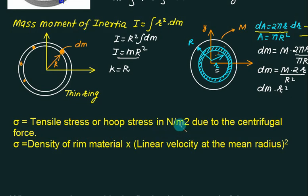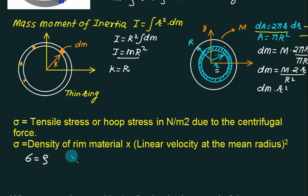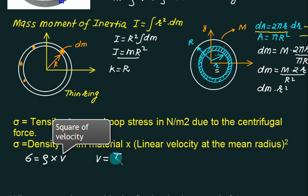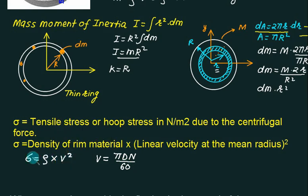Since the flywheel rotates continuously, it produces centrifugal force, which induces hoop stress (tensile stress) σ in the rim. This hoop stress is given by σ = ρv², where ρ is the density of the material and v is the linear velocity, which can be found using v = πDN/60.